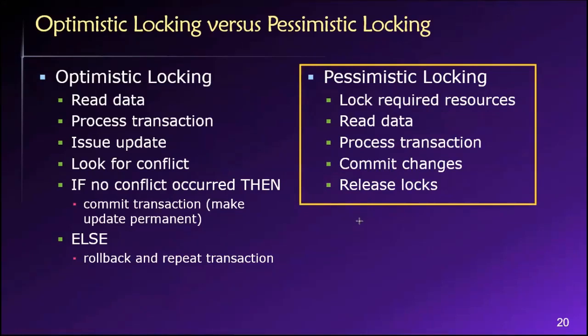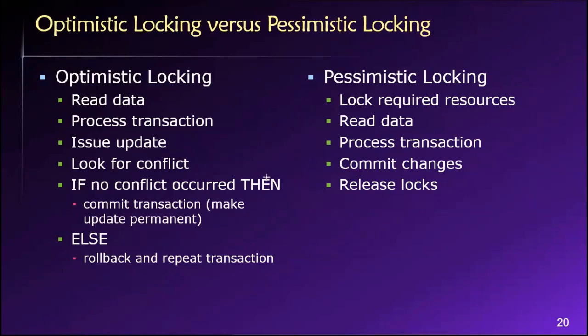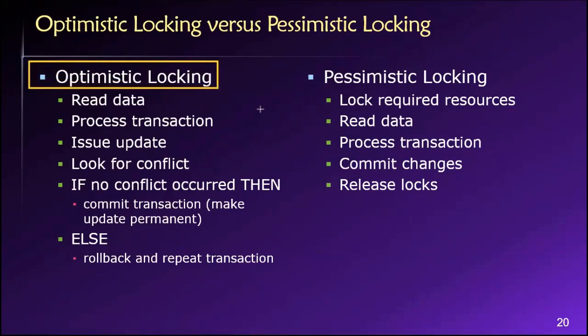But there is another way — we could try an optimistic locking strategy. Optimistic locking, as the name suggests, means we are optimistic that a conflict will not occur. We're feeling pretty good that things are going to go exactly as we need them to go, and it's very unlikely that someone else will want to use the same data that we're using at the same time.